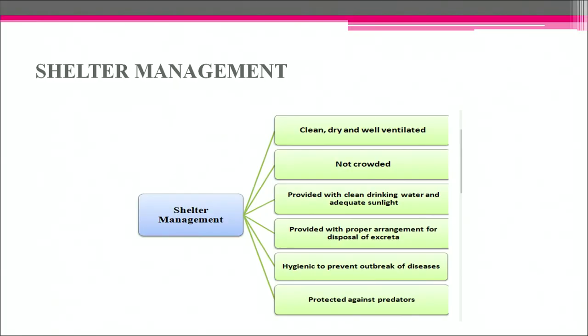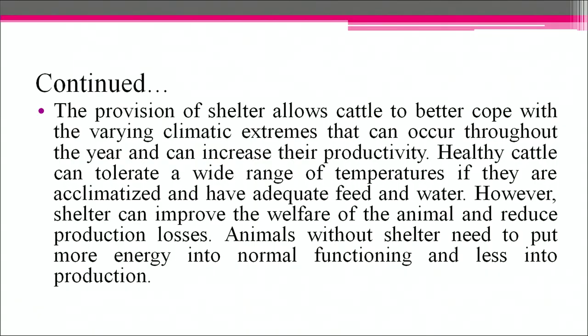Genetic improvement is a major factor contributing to the profitability of production systems for livestock and poultry. Breeding and selection have resulted in significant economic gains in beef, lamb, wool, milk, pork, egg and chicken production. Shelter management: the provision of shelter allows cattle to better cope with varying climate extremes and can increase their productivity. Healthy cattle can tolerate a wide range of temperatures if they are acclimatized and have adequate feed and water. However, shelter can improve animal welfare and reduce production losses, as animals without shelter need to put more energy into normal functioning and less into production.